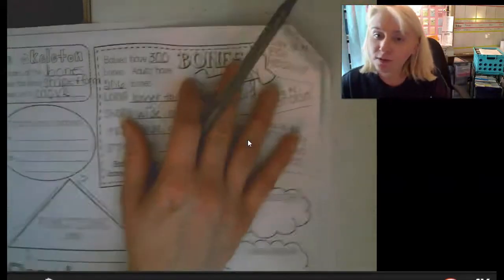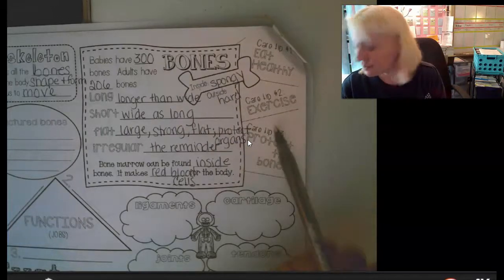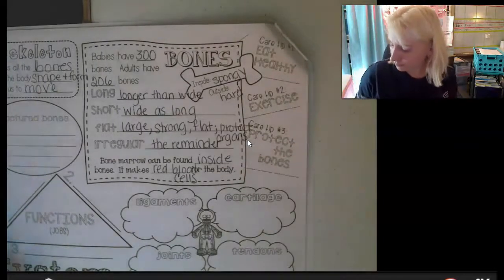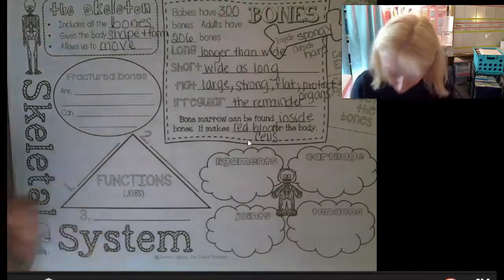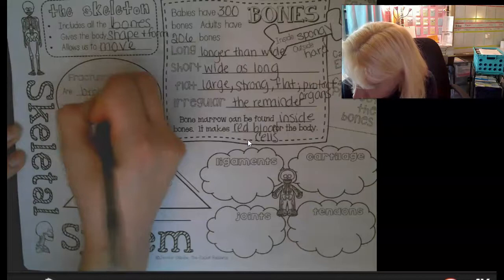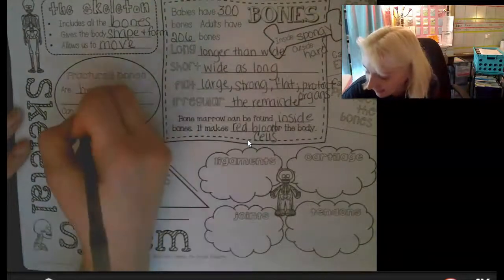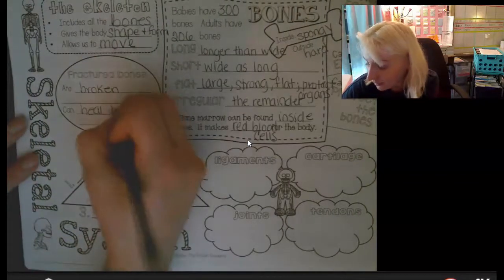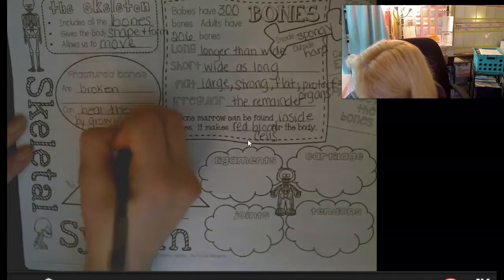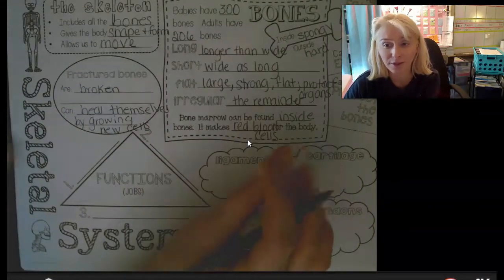There are three care tips for our musculoskeletal system: eat healthy, exercise, and protect our bones. Fractured bones are those that are broken, and what's really neat is they can heal themselves. Those of you who have had broken bones know what I mean — they repair themselves by growing new cells. Our bones are living; they grow cells and repair themselves when broken. It's pretty cool.